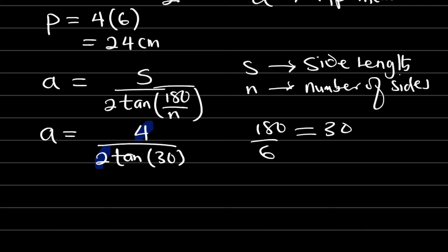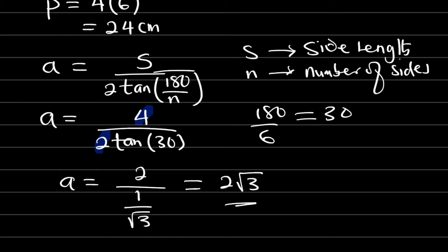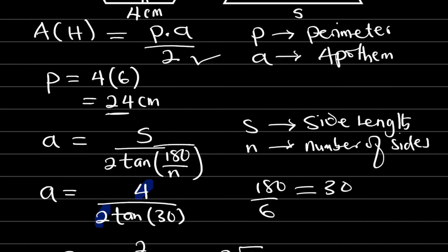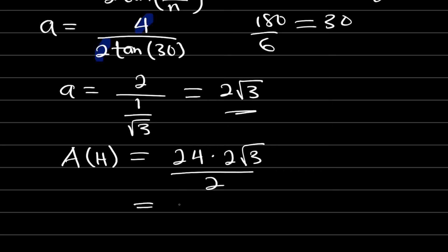Since 2 goes into 4 two times, we have a equal to 2 divided by tan 30, which is the same as 1 divided by √3. Therefore a is equal to 2√3. Now we have our apothem 2√3 and our perimeter 24; we can multiply them together and divide by 2 to obtain our area. The area of the hexagon equals the perimeter 24 multiplied by the apothem 2√3, divided by 2, which equals 24√3 centimeters squared. This is the area of the hexagon.